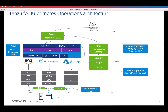Tanzu Mission Control helps you manage those clusters. We also have Tanzu Service Mesh, which by default, as you enable it for a cluster, will enable Mutual TLS by default for any services that get created. And we have Tanzu Observability that helps you monitor the entire stack all the way from applications to infrastructure.